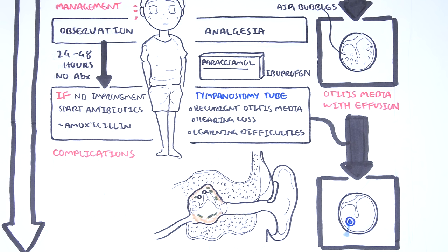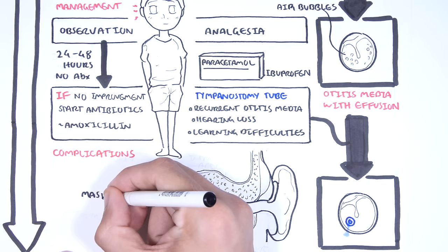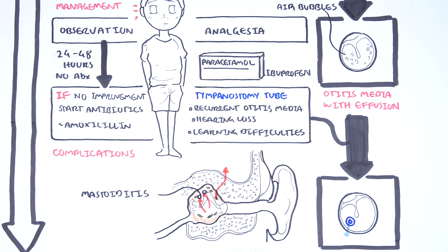Rare complications of acute otitis media can be divided into extracranial and intracranial complications. Most of the complications of acute otitis media is a result of direct extension of the infection, the pus, to the mastoid air cells, which are situated behind the posterior wall of the middle ear cavity. Extension into the mastoid air cells causes mastoiditis.